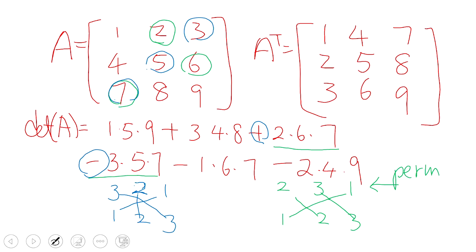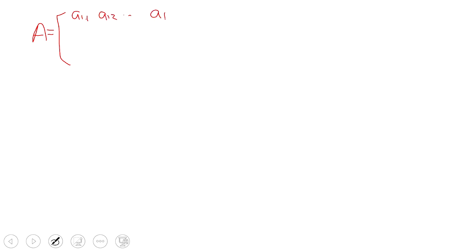We use sigma to represent a permutation. The sign of sigma is +1 if it is a positive (even) permutation and −1 if it is a negative (odd) permutation. For notation, the matrix A has elements a_{1,1}, a_{1,2}, ..., a_{1,n}, a_{2,1}, ..., a_{2,n}, all the way to a_{n,1}, ..., a_{n,n}.